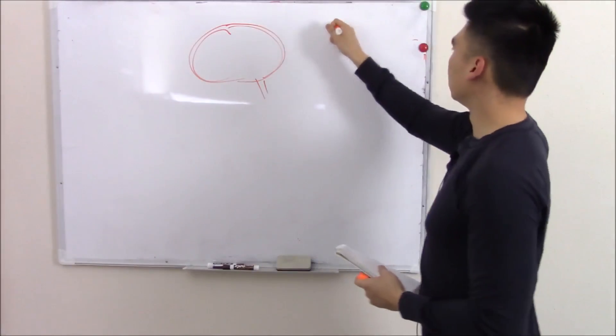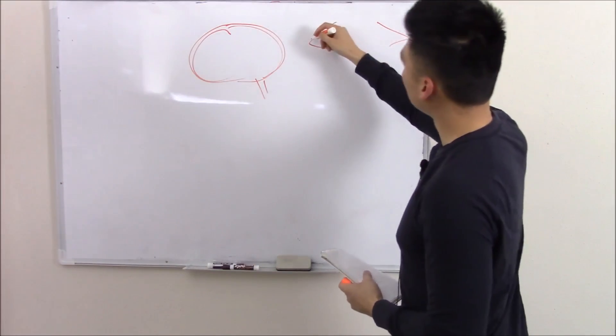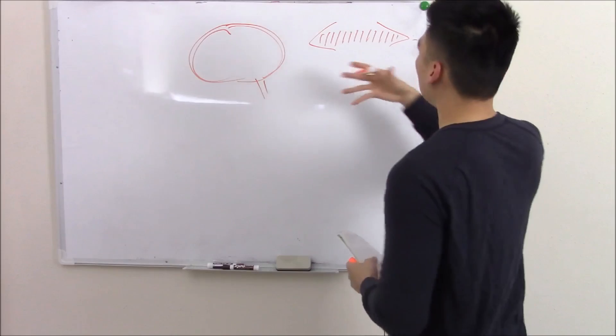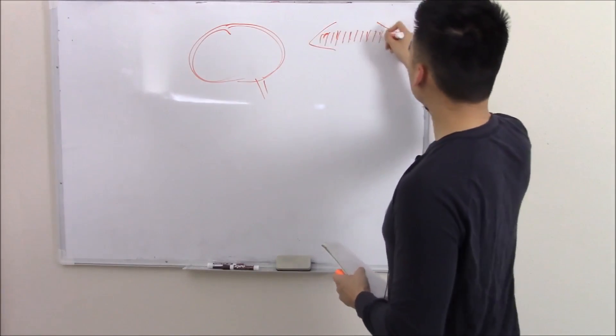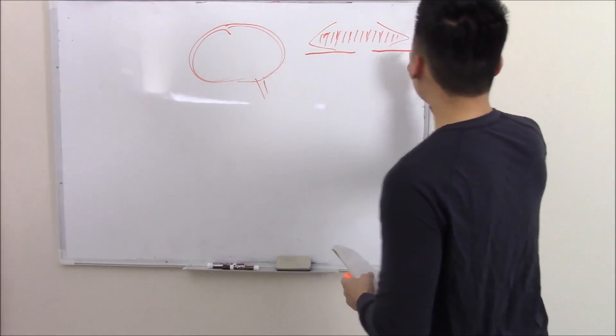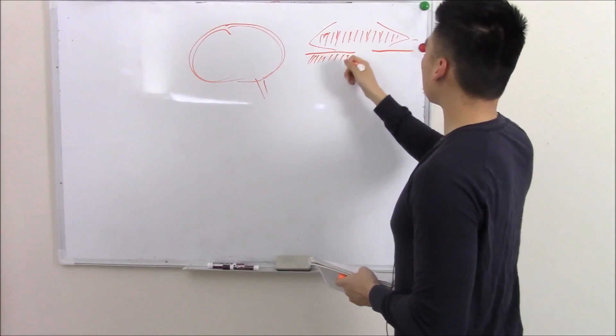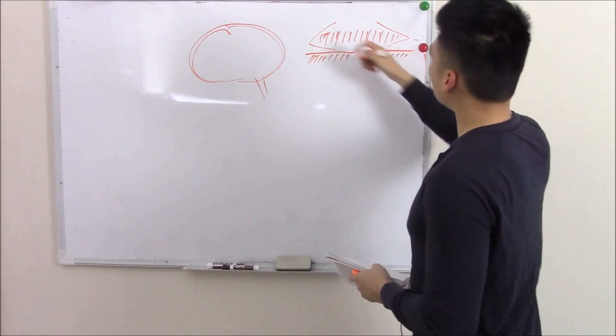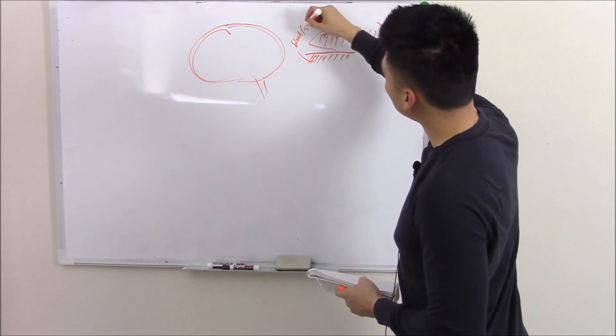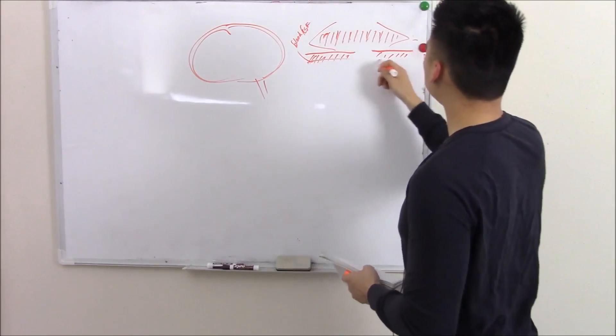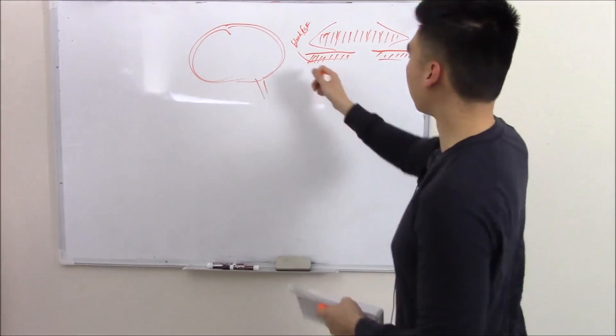You can break the meninges into the dura mater and the dural venous sinuses. Then you have your arachnoid with this subarachnoid space, that's where your blood and your CSF is. And then lastly your last layer would be your pia mater.